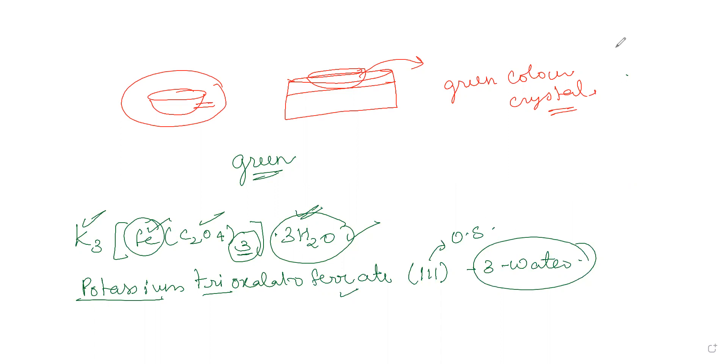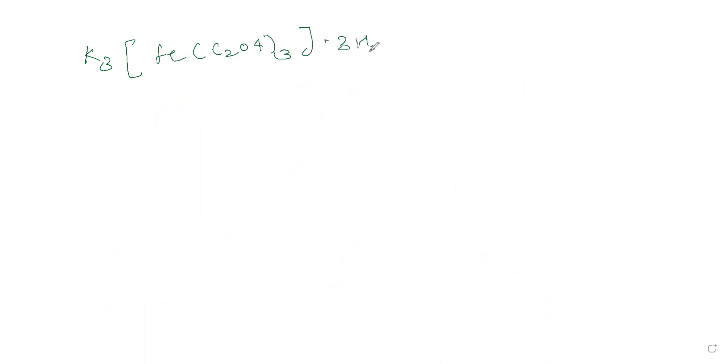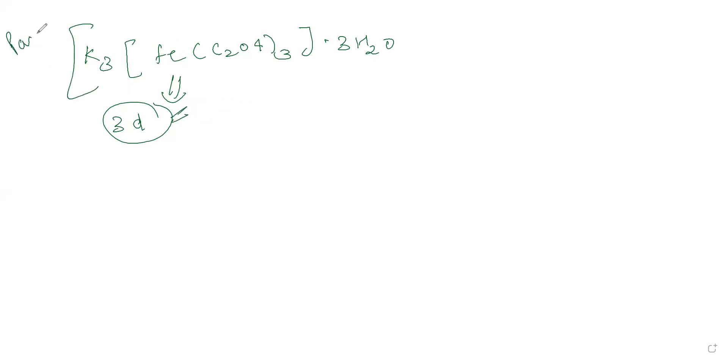One important question: why is this complex paramagnetic? It is paramagnetic because the 3d orbitals of Fe³⁺ contain five unpaired electrons. This is the reason the compound is paramagnetic.